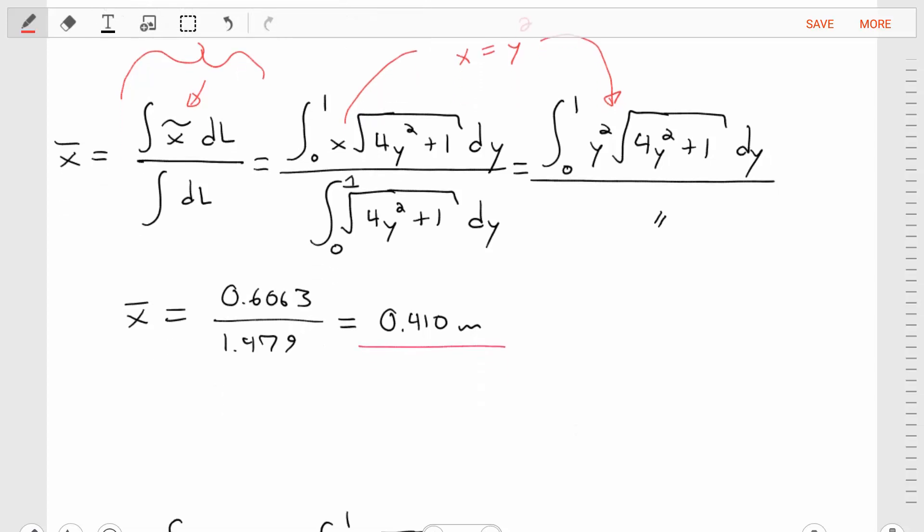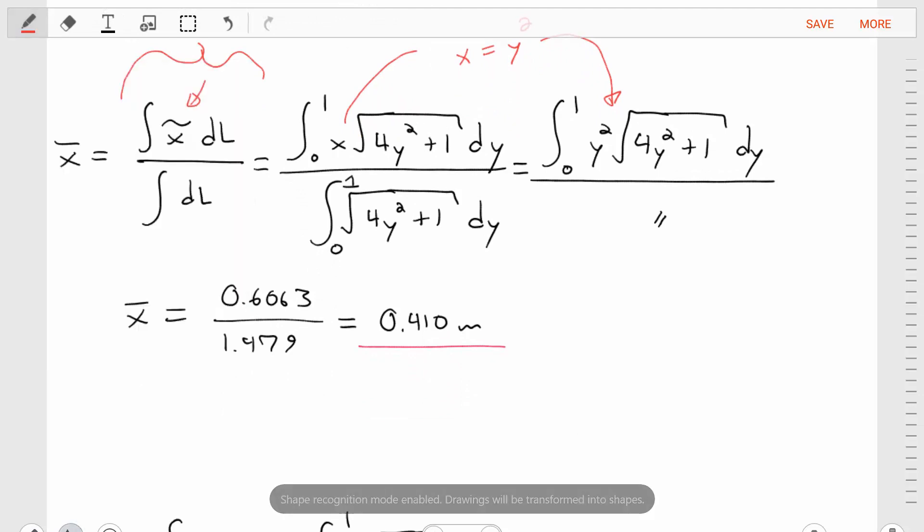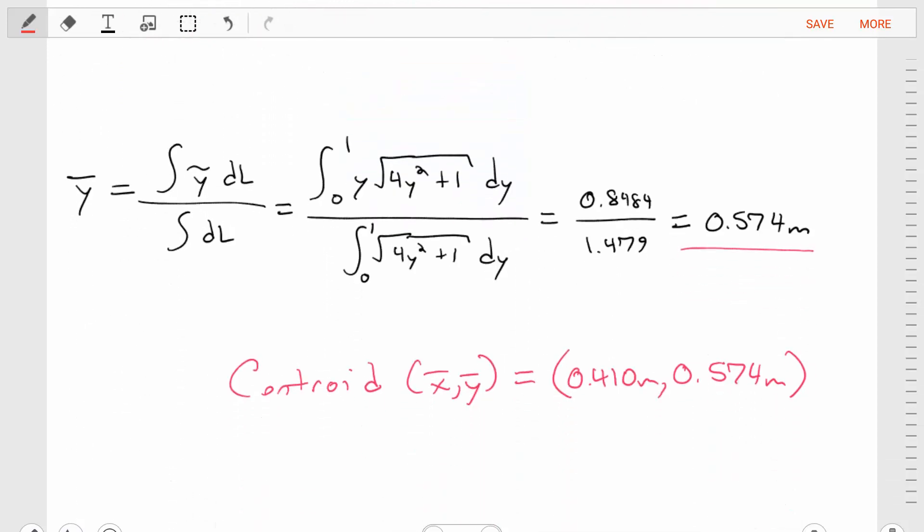So now we're at the point where we got to do a little bit of calculus. We perform the calculus, and we'll find that x-bar is equal to 0.41 meters. All right. That's great. Now we need to repeat this to find y-bar, the y position of the centroid.